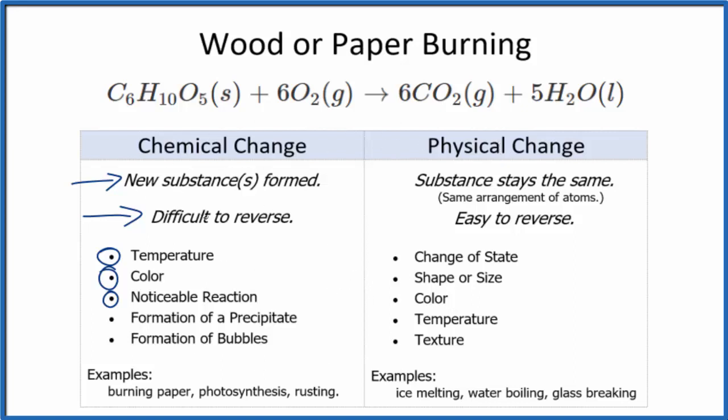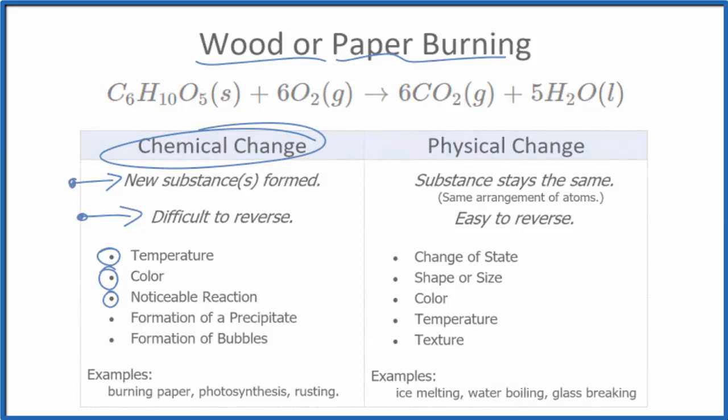When we have a chemical change, physical changes often take place. Key ideas, though: new substance formed, difficult to reverse. So to summarize, wood or paper burning is a chemical change. This is Dr. B, and thanks for watching.